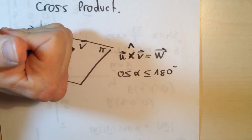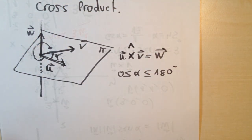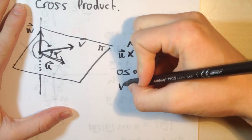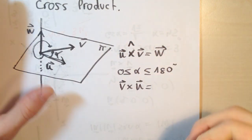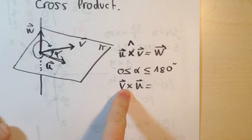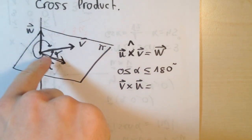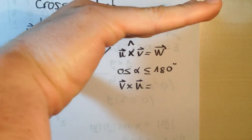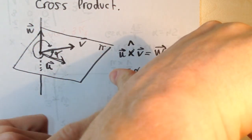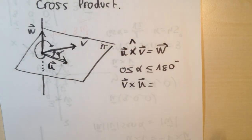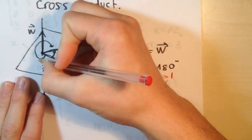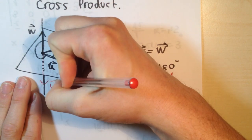If they would ask me for v cross u, we would apply the right-hand rule from v to u — v is first — by the shortest way. We put our fingers like this; my hand is now upside down. We go to u by the shortest way — my thumbnail is pointing downwards. So w prime will go downwards.